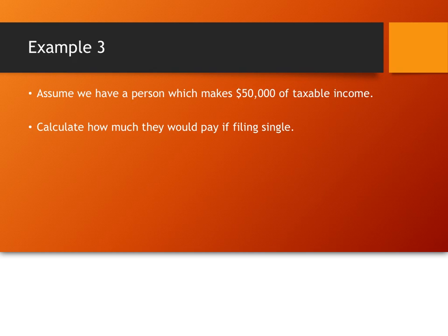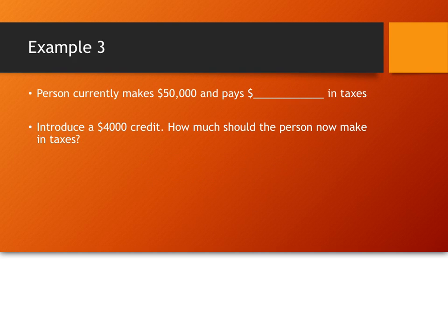All right. So, example three, basically, we already have calculated this. Since we've calculated it a few times, we can just say we know that, again, $8,356.25. You can do this on your own, or we've done it a few times. So, $8,356.25. If we've filed singly, so if they currently, if they had no deductions, they'd pay $8,356.25 in taxes.